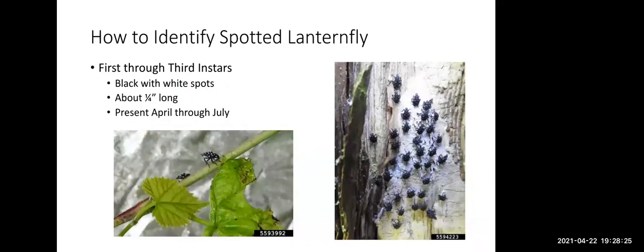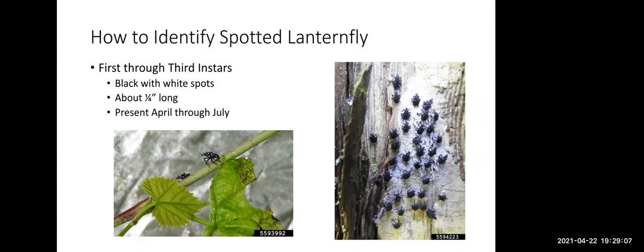The first through third nymphal instars of spotted lanternfly appear beetle-like. Some people mistake them for ticks. They're all black with white spots, about a quarter inch long, and you'll find them April through July. They're quite shy and good at hiding, and very fast — making them the least detectable of all the life stages. You can see a couple of early instars on a grapevine, and many instars hatching from an egg mass.